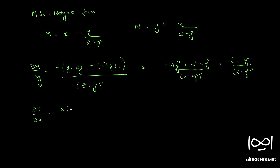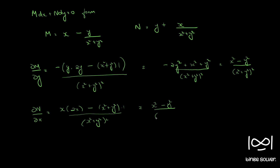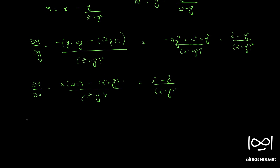For ∂N/∂x: x times the differential of second (which is 2x) minus (x squared plus y squared) times the differential of first (which is 1), over (x squared plus y squared) squared, equals (2x squared minus x squared minus y squared), which simplifies to (x squared minus y squared) divided by (x squared plus y squared) squared. We can see ∂M/∂y equals ∂N/∂x.